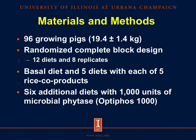Moving on to materials and methods, we used 96 growing pigs with an average initial body weight of 19.4 kilograms, which were enrolled into 12 diets in a randomized complete block design, with 6 and 8 replicates per diet. One basal diet based on corn and soybean meal was formulated and 5 additional diets with each of the 5 rice coproducts were also formulated. In addition, 6 diets identical to the first 6 were supplemented with 1,000 units of microbial phytase per kilogram of diet.